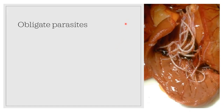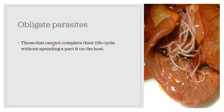Another classification is obligate parasites. Obligate parasites are those that cannot complete their life cycle, cannot survive, and cannot reproduce without spending part of it on the host. It is said that an obligate parasite must lead a parasitic existence — an existence wherein the organism is directly dependent on another organism for its survival, reproduction, or to complete its life cycle. Obligate parasites are not capable of leading a free-living existence.